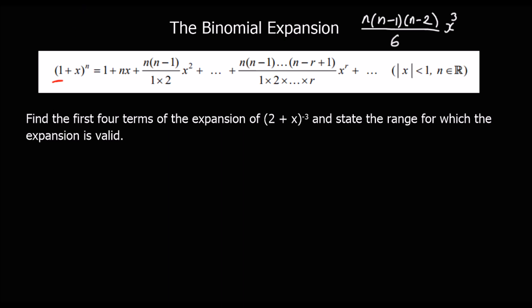The expansion is only valid when |x| is between minus 1 and plus 1, because we need the terms to be getting smaller every time instead of bigger.